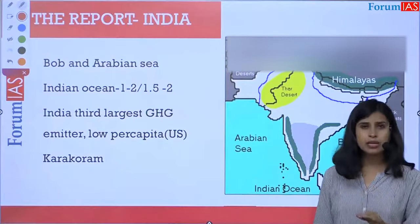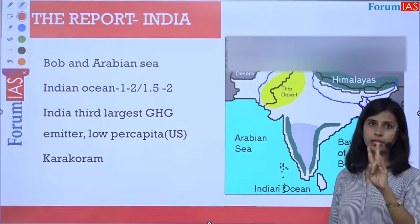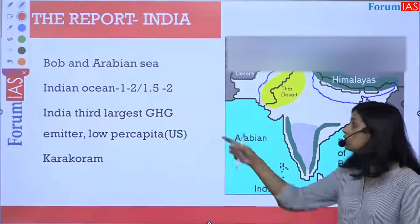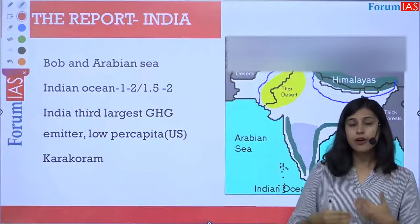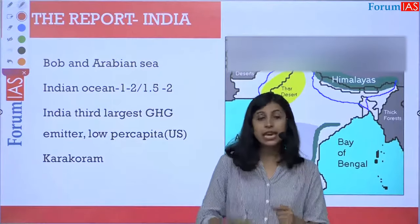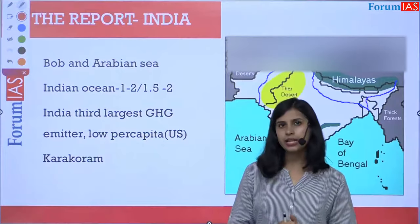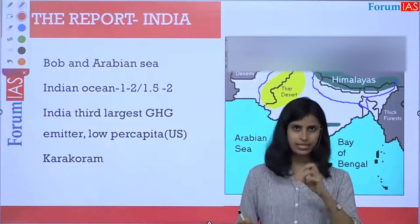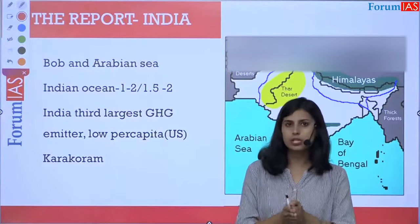Historically, if the Bay of Bengal had 5 cyclones on average, the Arabian Sea had about 2. But recently this ratio has changed — we have seen 3 in the Arabian Sea — because sea surface temperature has varied significantly. The report also talks about the Indian Ocean water level rising. India's overall greenhouse gas emission puts it at third place globally, largely because of its high population, though in per capita terms India is far behind — a person in the US emits 9 times more greenhouse gas than one in India.